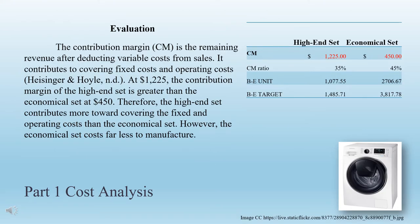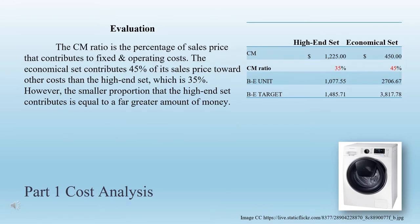Evaluation: The contribution margin is the remaining revenue after deducting variable costs from sales; it contributes to covering fixed and operating costs. At $1,225, the contribution margin of the high-end set is greater than the economical set at $450. Therefore, the high-end set contributes more toward covering fixed and operating costs. However, the economical set costs far less to manufacture. The contribution margin ratio is the percentage of sales price that contributes to fixed and operating costs. The economical set contributes 45% of its sales price, compared to 35% for the high-end set. However, the smaller proportion of the high-end set equals a far greater dollar amount.